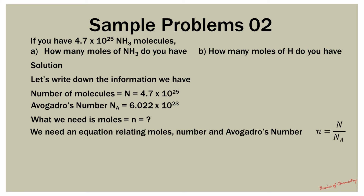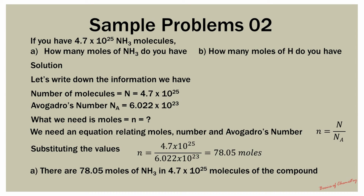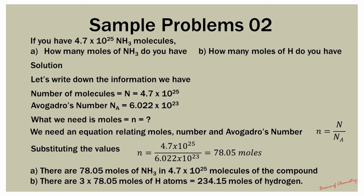Substituting the values, moles is equal to 4.7 × 10²⁵ divided by 6.022 × 10²³, which gives us 78.05 moles of ammonia. Since each molecule of ammonia contains 3 hydrogen atoms, the number of moles of hydrogen is equal to 3 times the number of moles of ammonia, or 234.15 moles of hydrogen atoms.